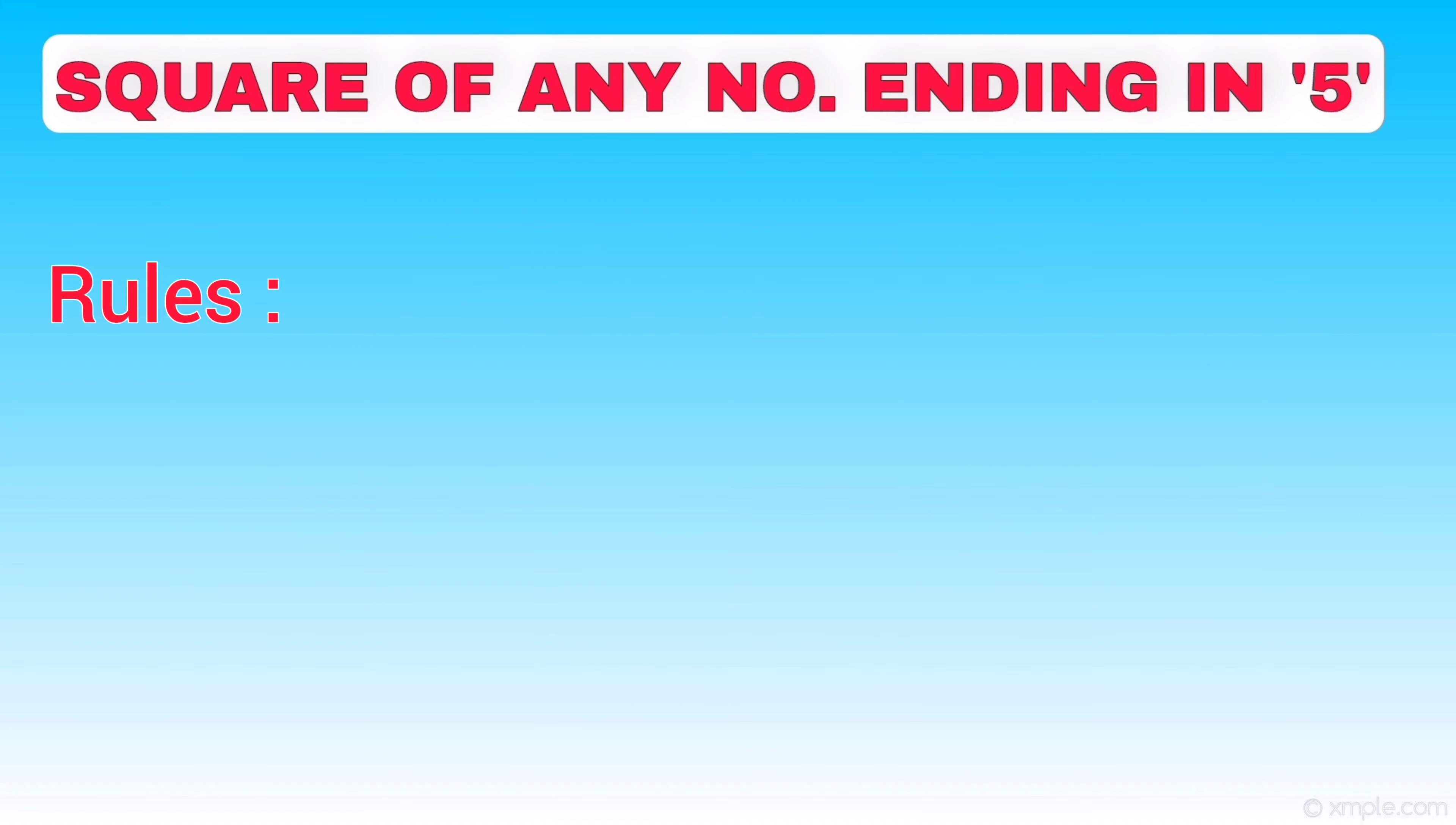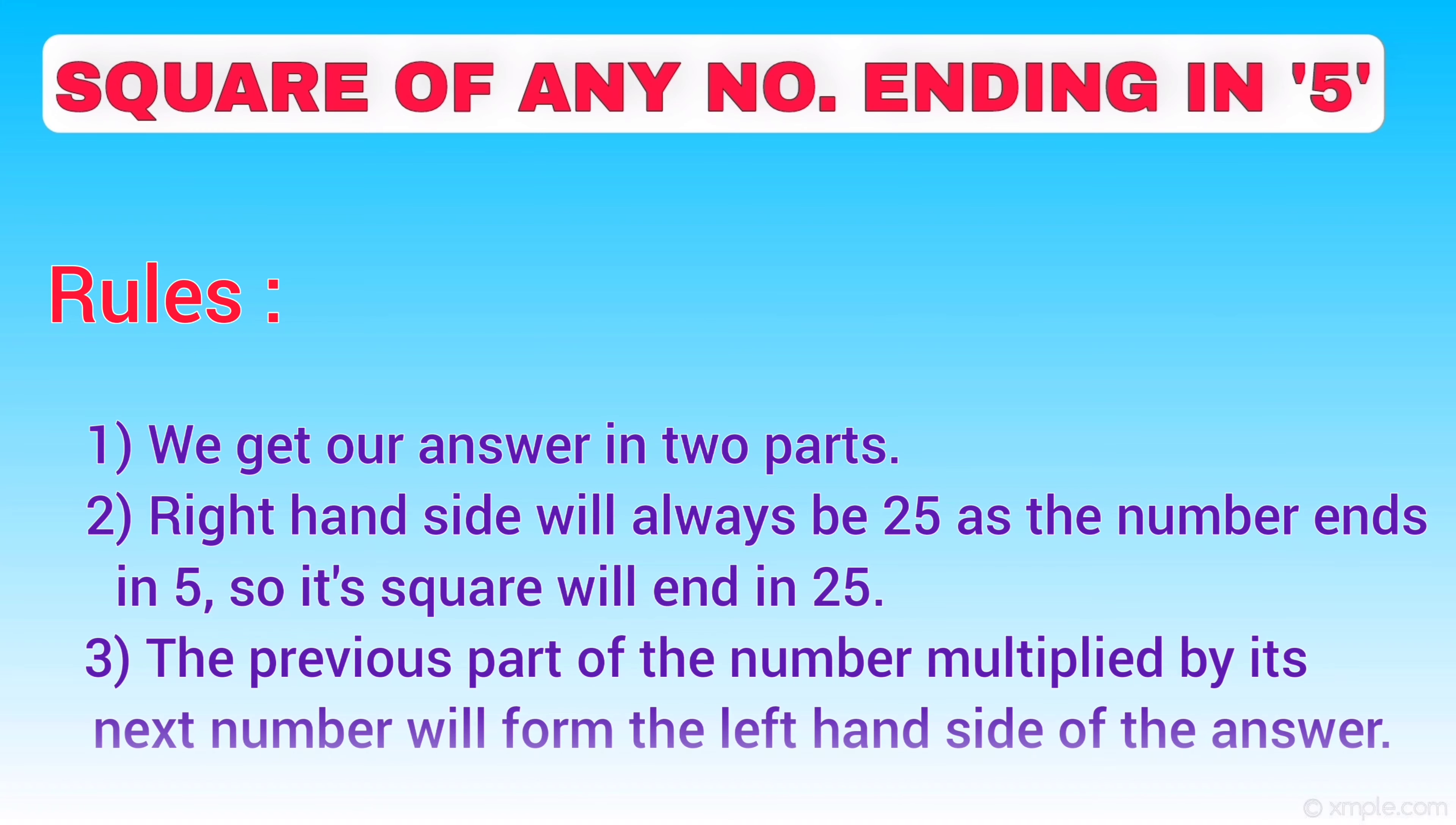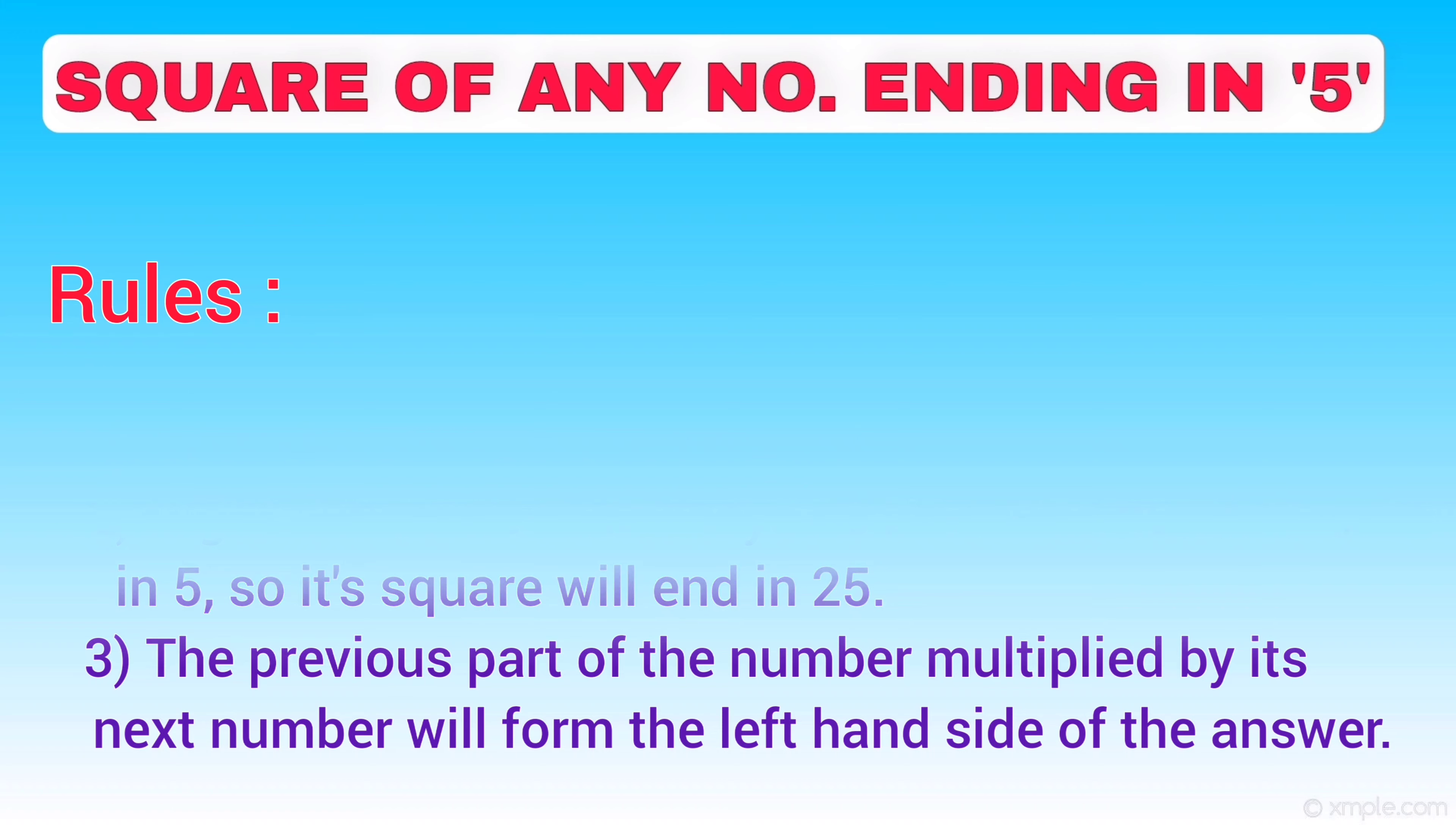The rules we need to follow for this trick are: First, we get our answer in two parts. Second rule is, the right hand side will always be 25. As the number ends in 5, its square will end in 25. And the third rule is, the previous part of the number multiplied by its next number will form the left part of the answer.